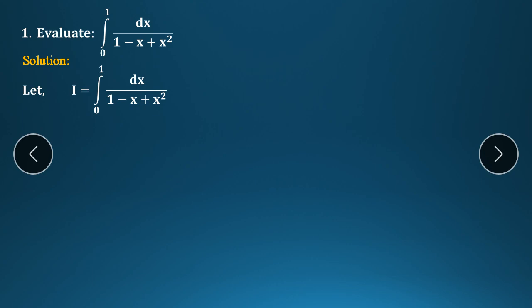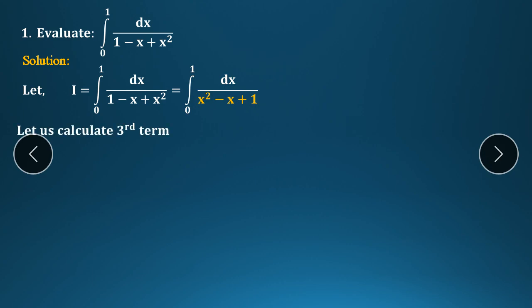So, solution: first of all, let I equal to the given integrand. We write I, and in the denominator you can see the x² term is taken first, then minus x, and the constant term is shifted — so this is in the form of a quadratic equation. Now in the next step, we need to find the third term.